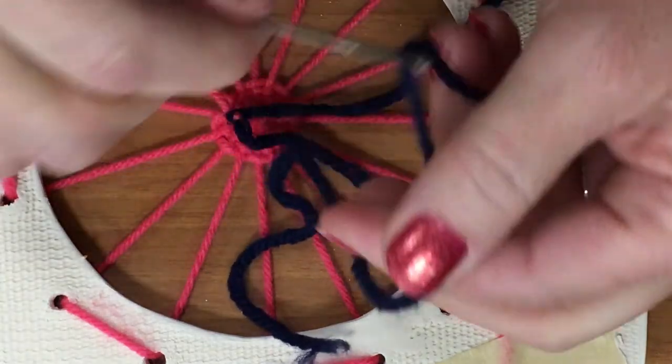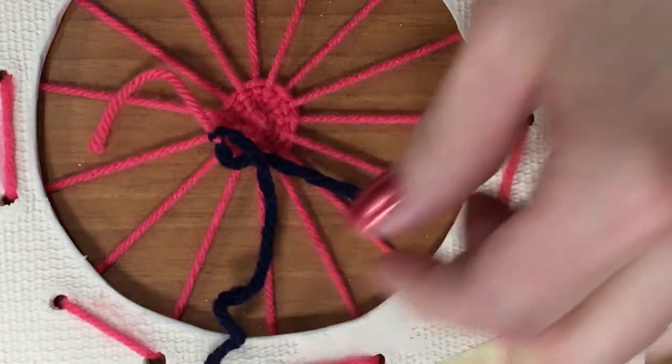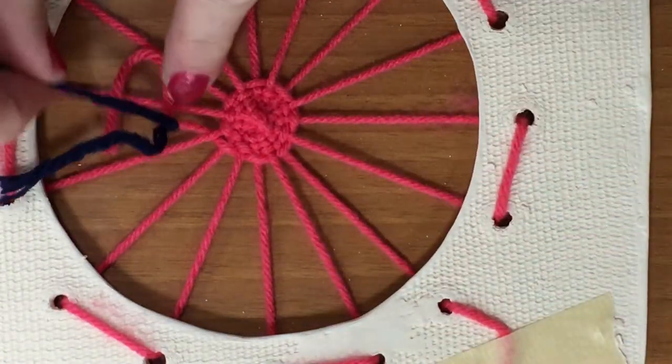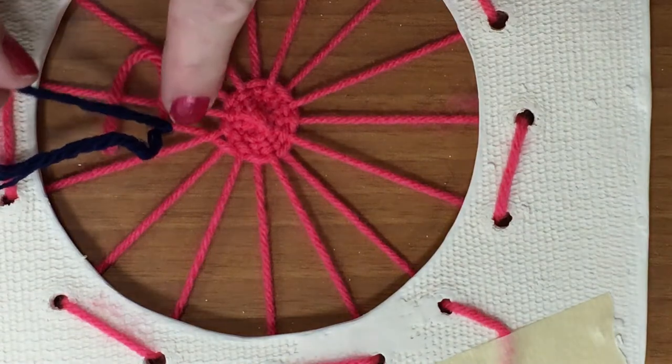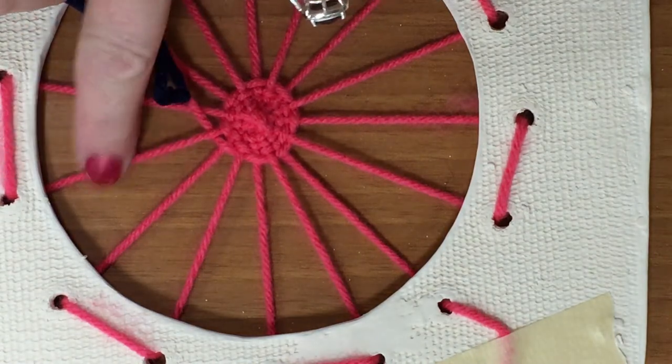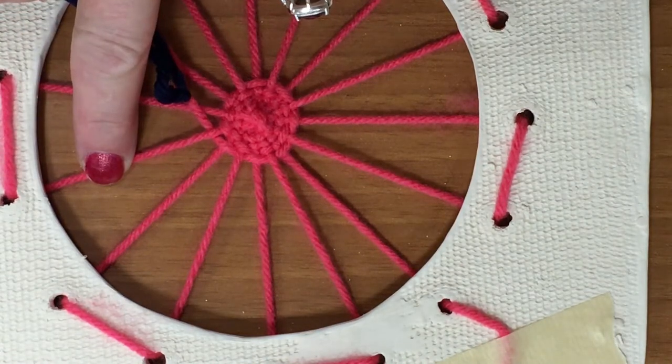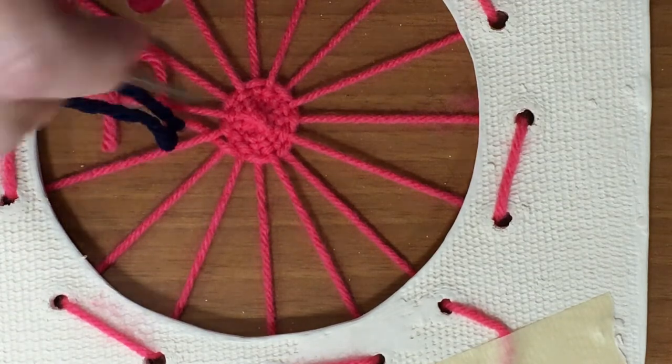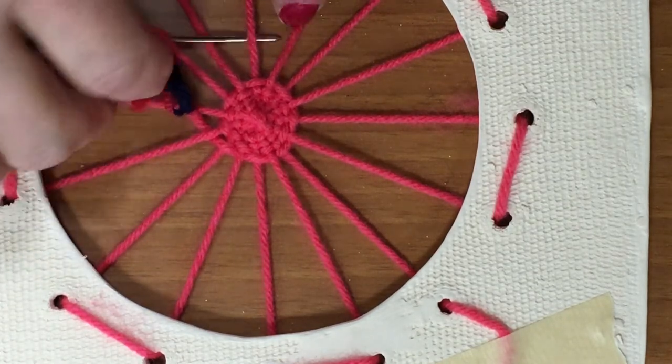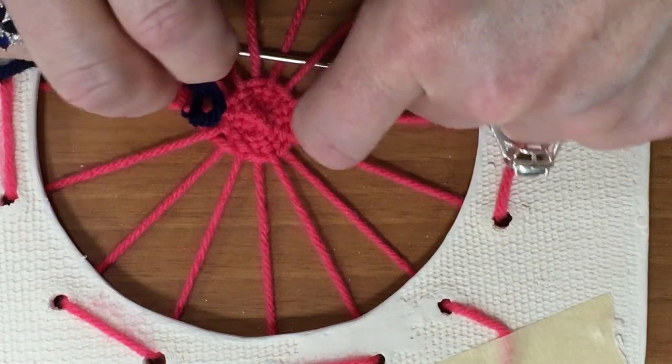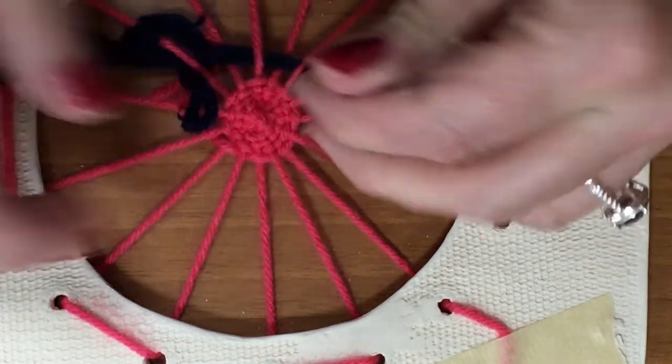And I'm going to put it onto the blue yarn. And now I'm going to look very carefully. You can see that I came out underneath this warp string. Which means I have to go over this warp string.